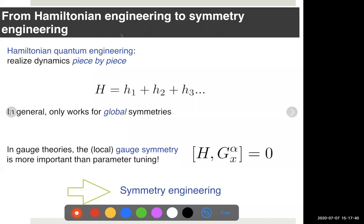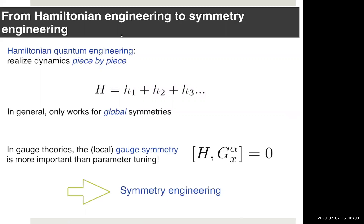When we think about cold atoms, trapped ions, or circuit QED experiments, what we have in mind is typically Hamiltonian engineering — we find microscopic mechanisms to realize each term of a target Hamiltonian individually. That's good for global symmetries, but for local symmetries it's extremely complicated because each term must independently and locally commute with an operator. This is essentially impossible unless we rely very heavily on fine tuning. So this field is actually based on a different concept: symmetry engineering — we really want dynamics that is first and foremost gauge invariant.